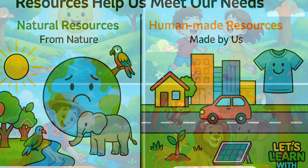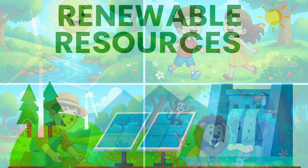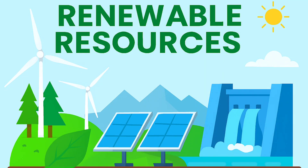Now let's explore natural resources first. These are things nature gives us, like sunlight, water, air, soil, forests, animals, and minerals. Without these, life on earth would not be possible.